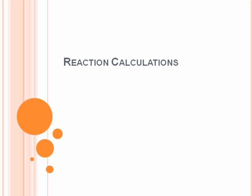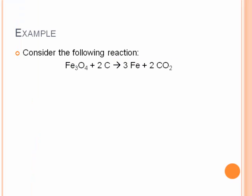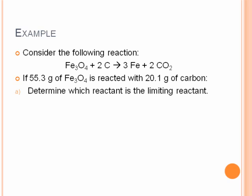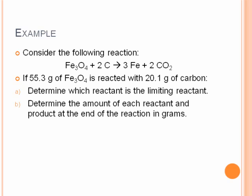We're going to look at reaction calculations, and in particular limiting reactant calculations. Consider this reaction: Fe3O4 plus two carbons reacts to form three irons plus two carbon dioxide. If we start with 55.3 grams of Fe3O4 and react that with 20.1 grams of carbon, we want to determine which reactant is the limiting reactant and determine the amount of each reactant and product at the end of the reaction in grams.